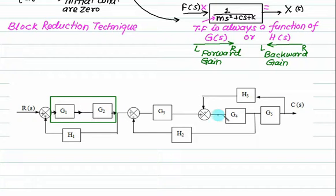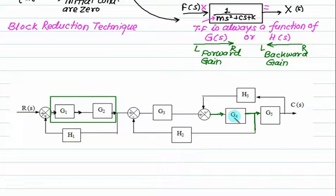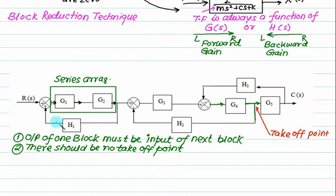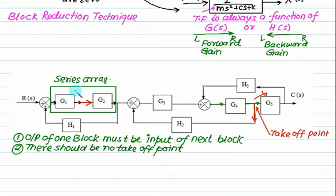For example, this is the input of G4 and this is the output of G4. It is the input of G5, but there should not be an additional branch. The output of G1 entirely goes to G2, whereas here only a part is going. So if you have a block arrangement where the output of one block is the input to the next block, it is called a series arrangement. The condition is that the output of G1 must equal the input of G2, and in between there should not be a takeoff point. The branch should not get divided.